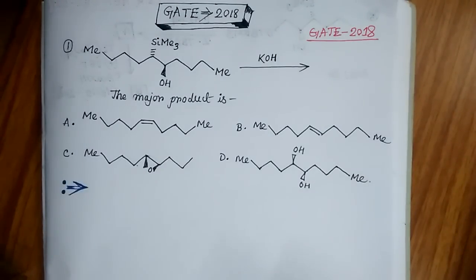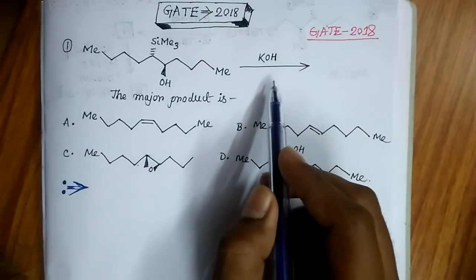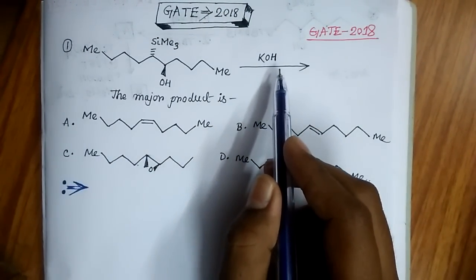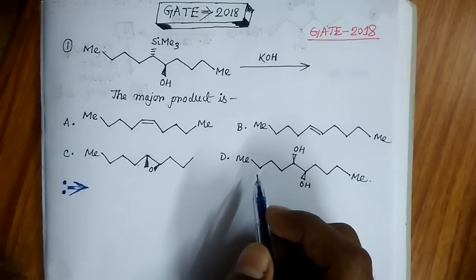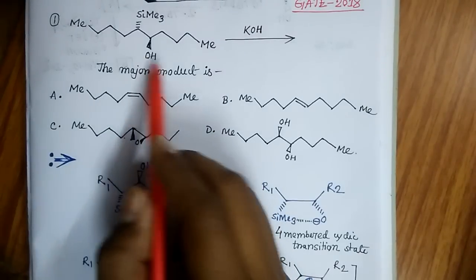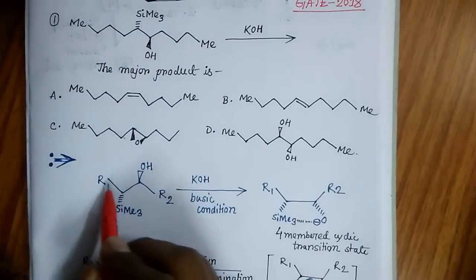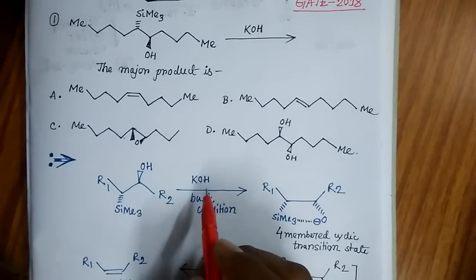For the first question which appeared at GATE 2018, this compound is given and it is treated with potassium hydroxide. The major product is what? Four options are given and you have to select one among them.